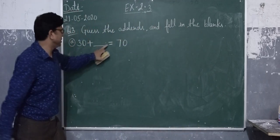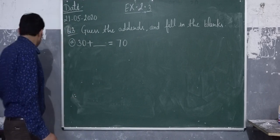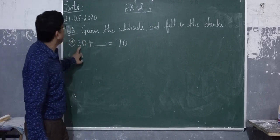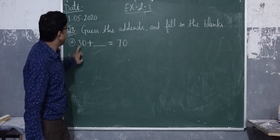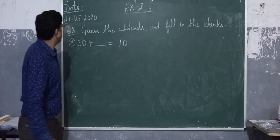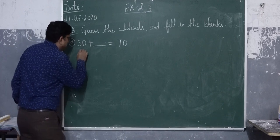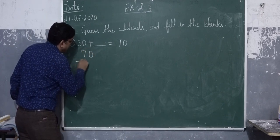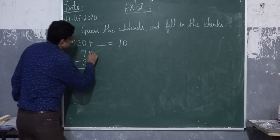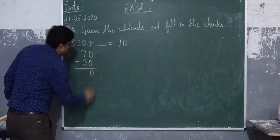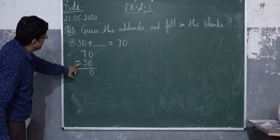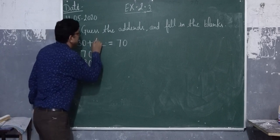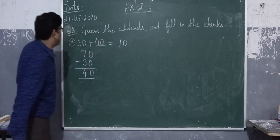30 plus what is equal to 70? If the number is ending in 30, our answer is equal to 70. Just 70 minus 30. 0 minus 0 is equal to 0. 7 minus 3 is equal to 4. Our answer is 40.